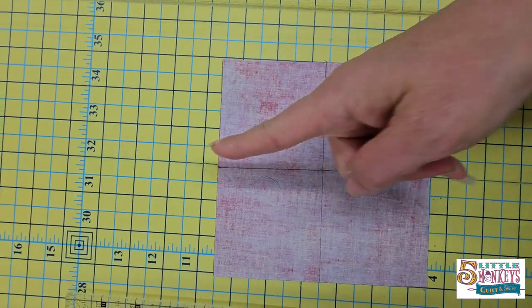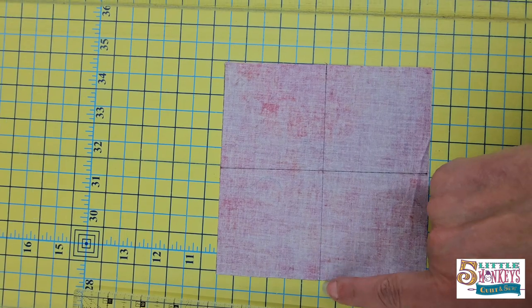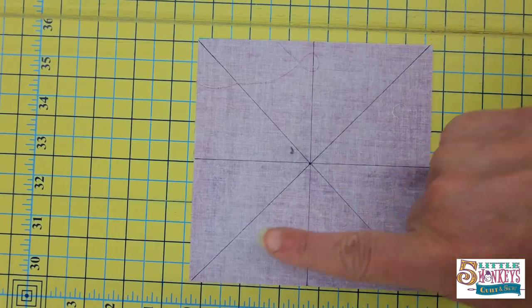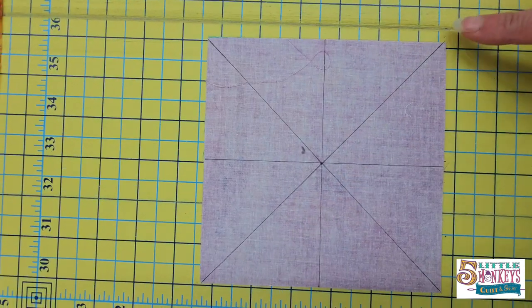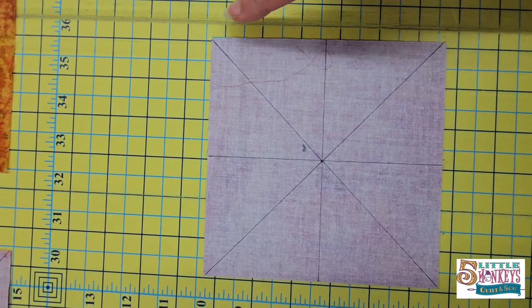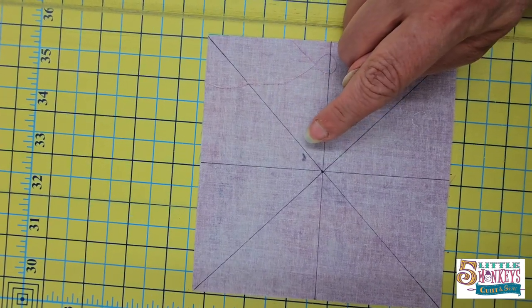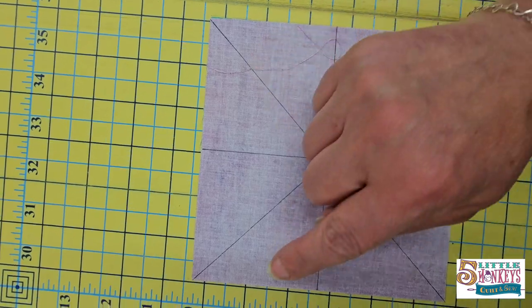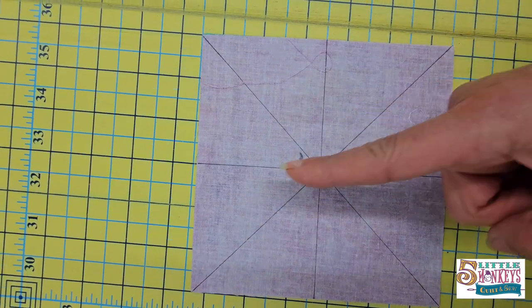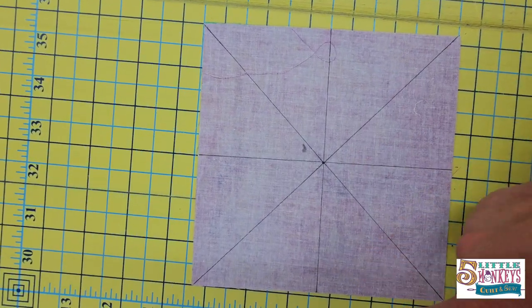First, we're going to mark a line down the middle from top to bottom and right to left. We're going to mark a line from corner to corner. Now I'm going to go to my machine and sew both sides of this line and this line, not the straight up and down lines.